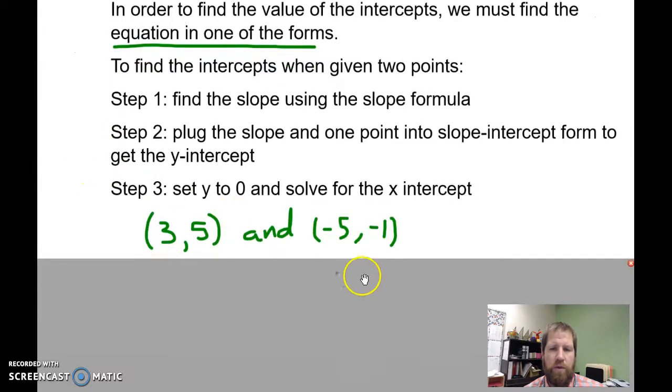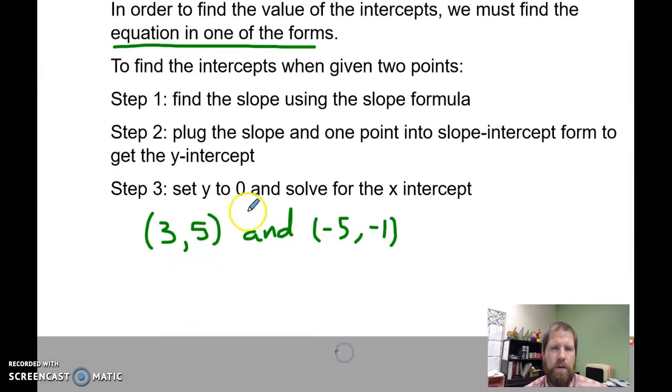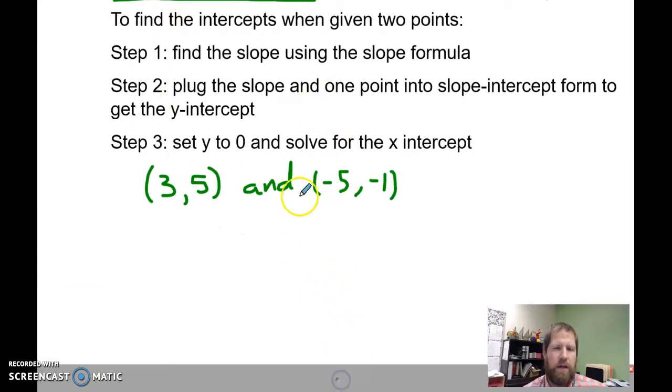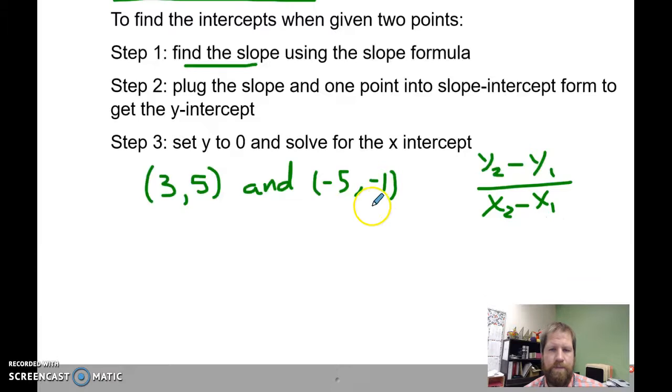So when we're given two points, I think the best way, and for any of these that you're doing, the way you're going to start is to find the slope using the slope formula. So, y2 minus y1 over x2 minus x1.